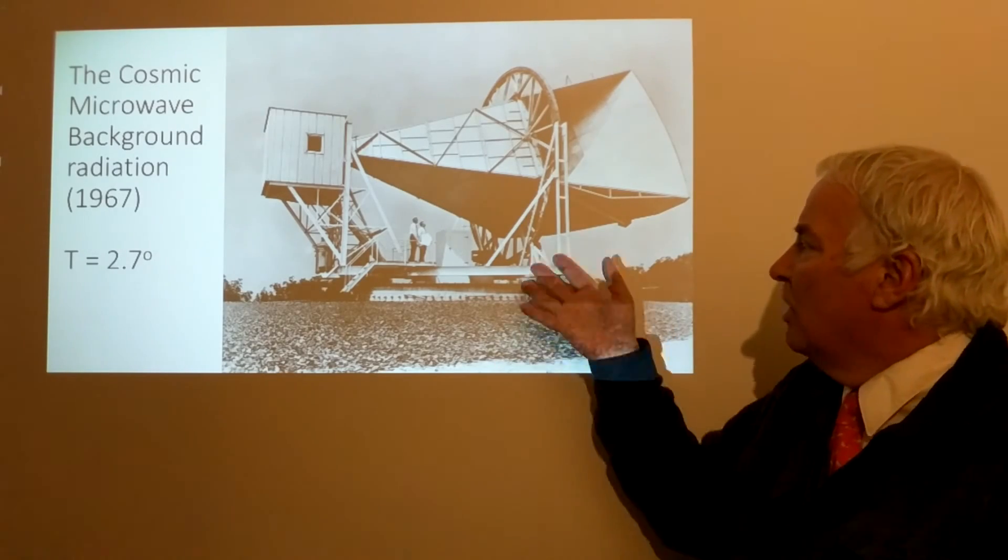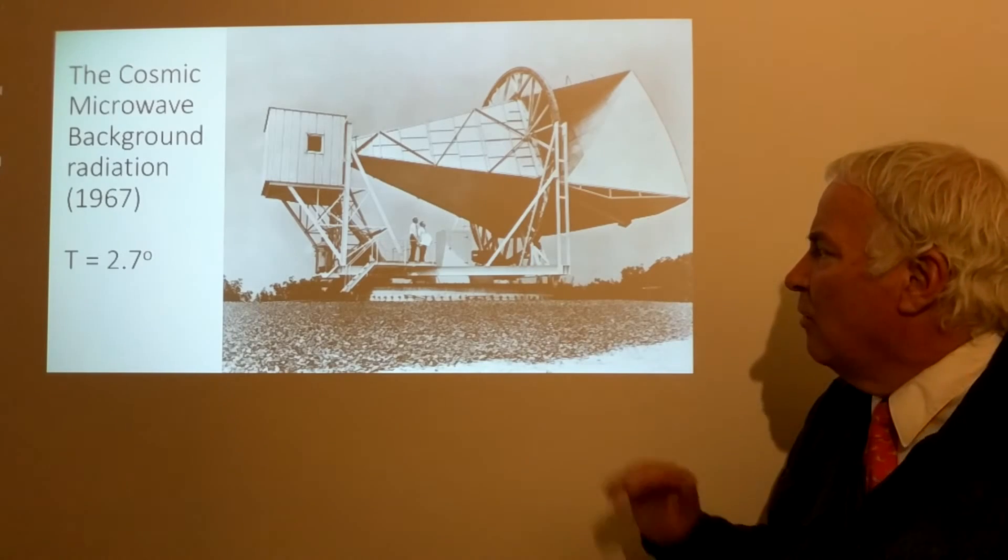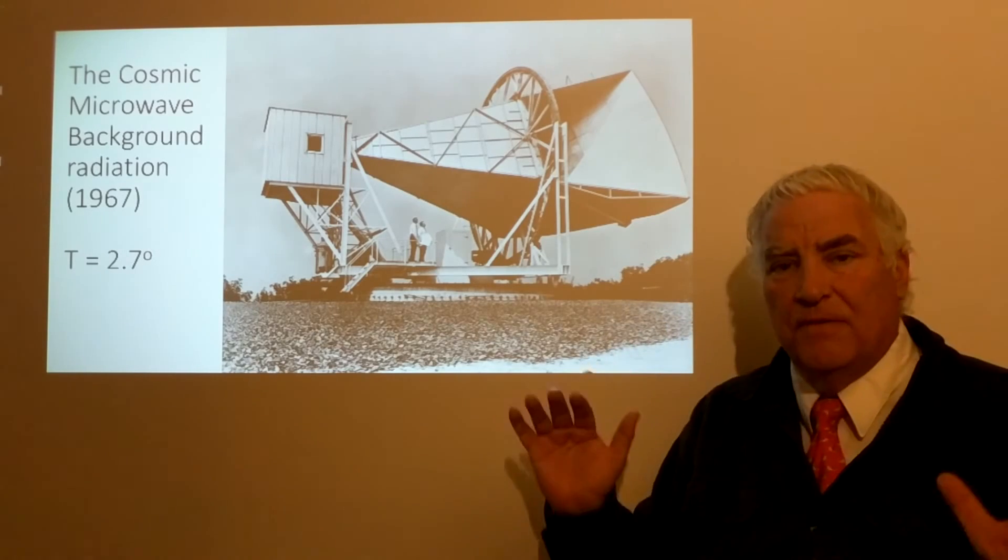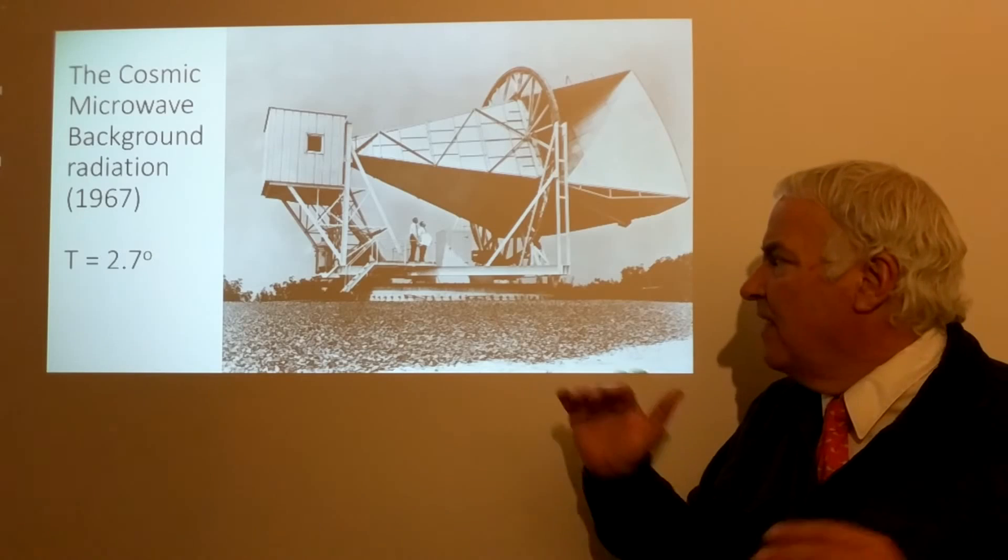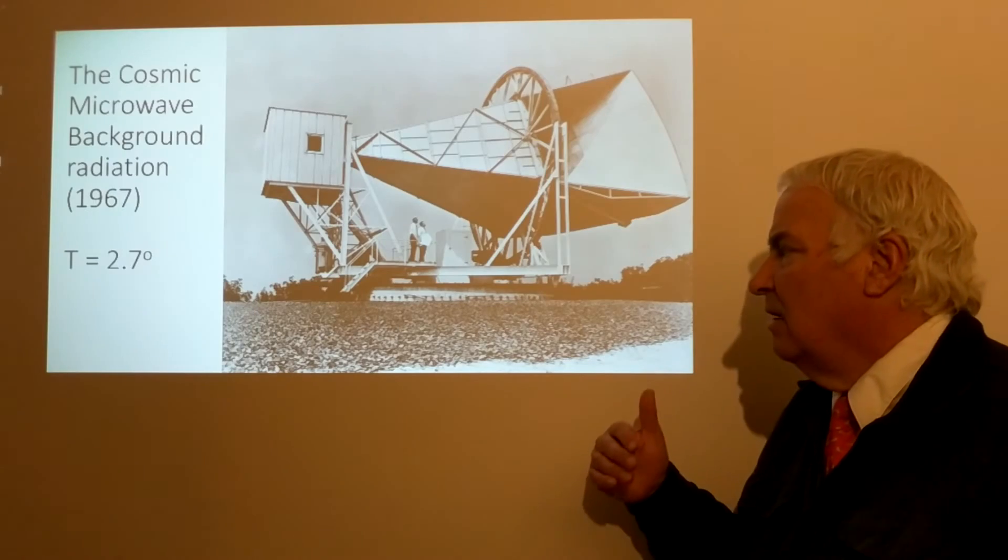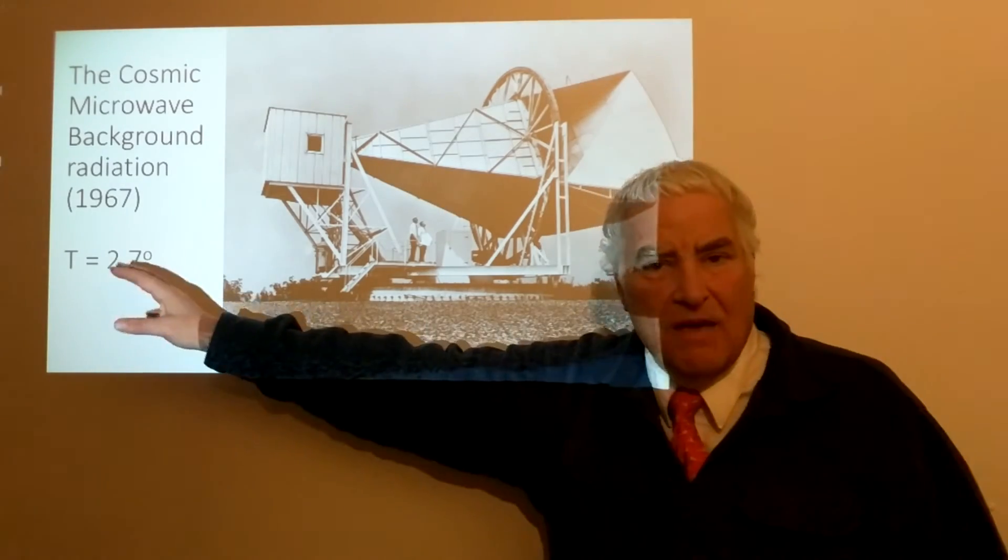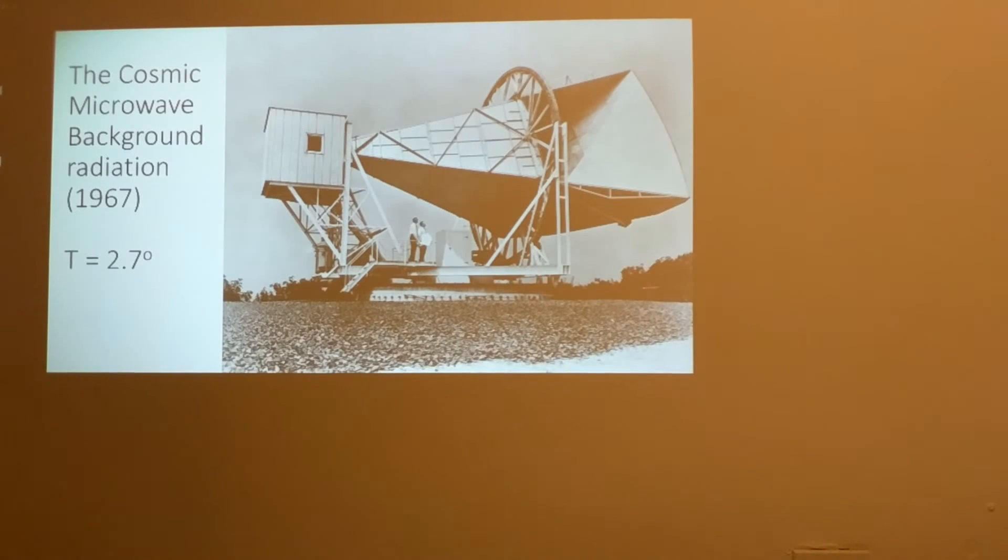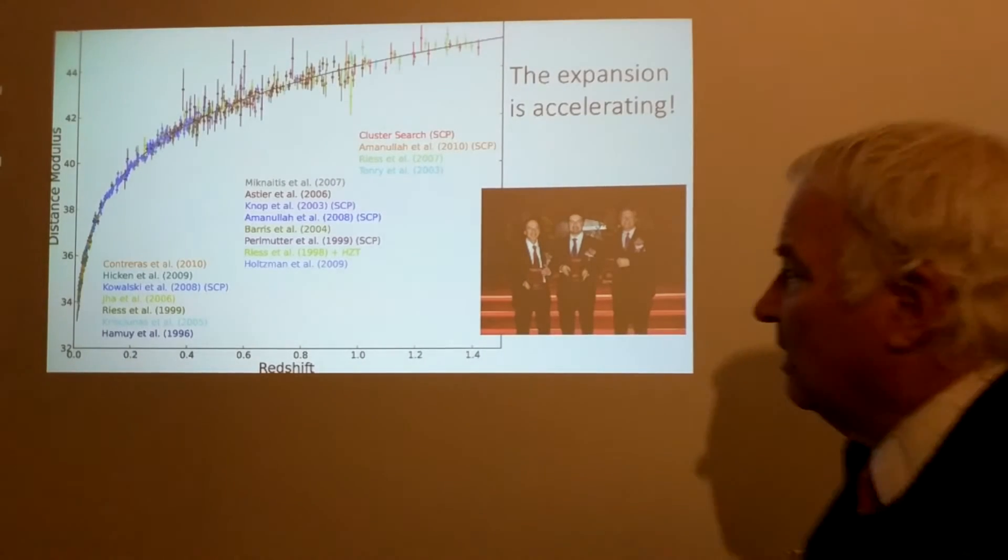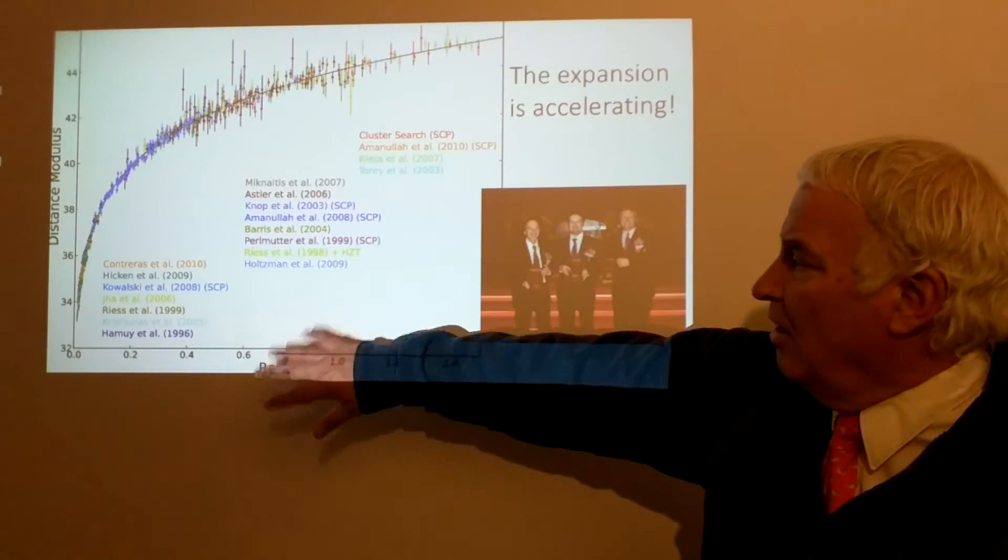They found that no matter where they looked in the sky, there was a source of light—a very long wavelength radio emission corresponding to a black body temperature of 2.7 Kelvin as the temperature of empty space. This was a confirmation of Gamow's prediction.